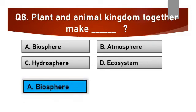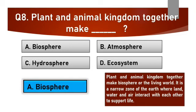Answer is A: Biosphere. Plant and animal kingdom together make biosphere, or the living world. It is a narrow zone of the earth where land, water, and air interact with each other to support life.